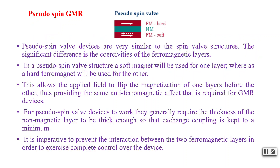Next is pseudo spin valve GMR. Here we use two ferromagnetic layers — one is hard magnetic, meaning it is more strongly ferromagnetic, and the other is soft. The hysteresis loop is large for the hard material and small for the soft magnetic material. Pseudo spin valve devices are very similar to spin valve structures, but the significant difference is that the coercivities of the ferromagnetic layers are very different.